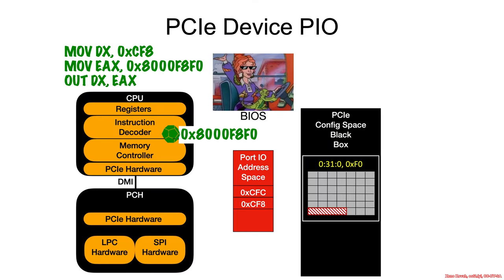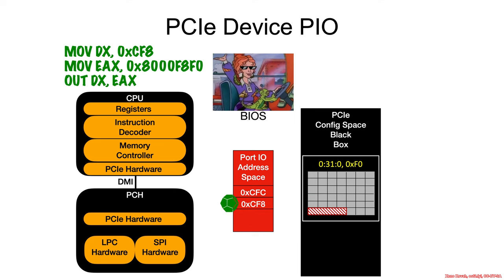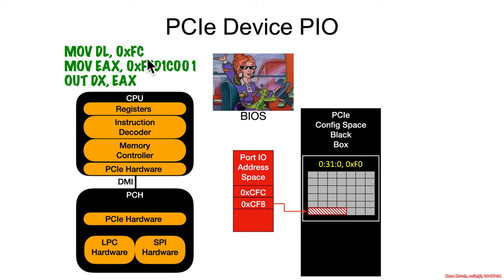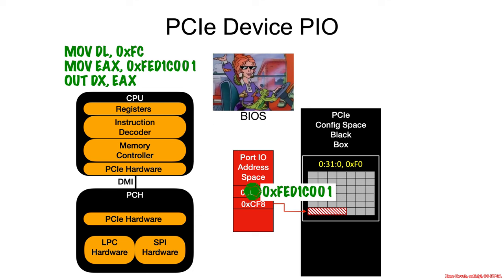Ms. Frizzle throws down some out assembly instructions, and that particular bus 0, device 31, function 0, offset F0 is written into CF8. Now on the next read or write to CFC, it is going to be pointing at this particular location — this particular offset in the configuration address space. The next assembly instructions move FC into DL, the least significant byte of DX, turning it into CFC since DX already had CF8. Then some constant is written in, and whenever it's written to CFC it's placed into the configuration address space at 0, 31, 0, F0.